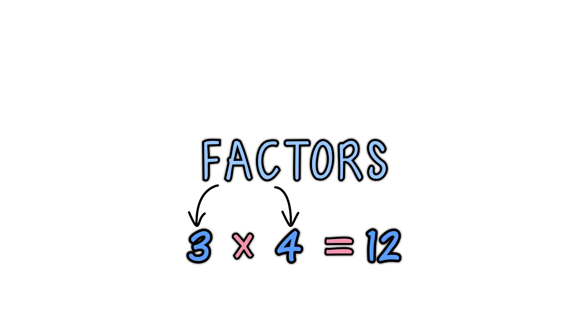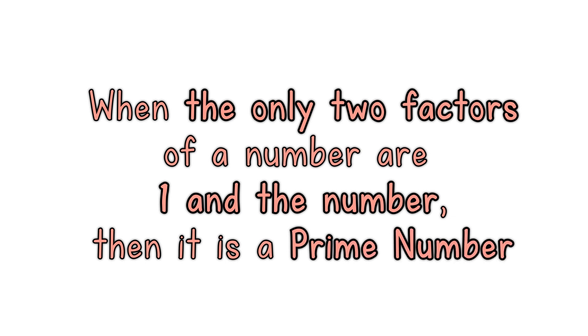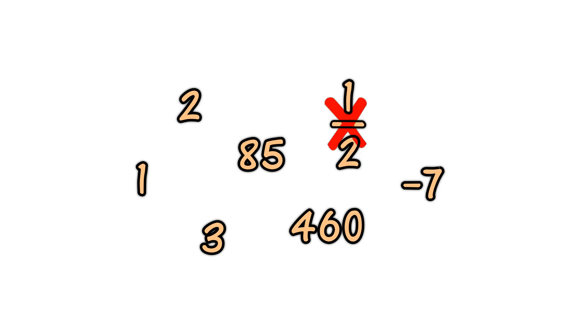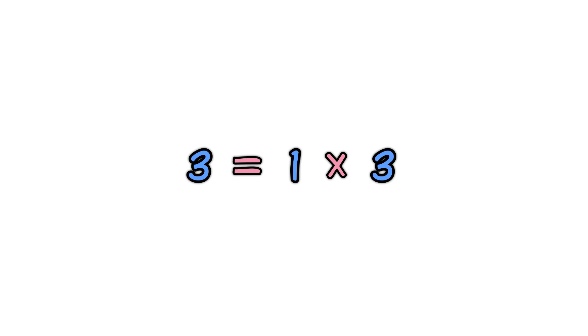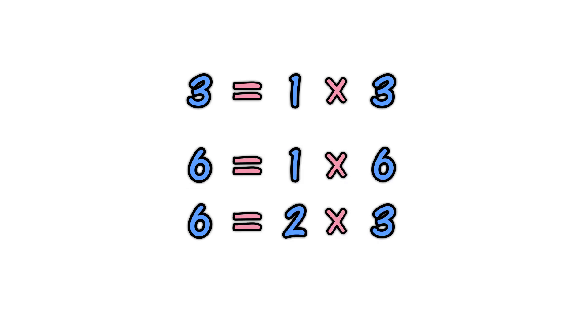Factors. We can also define a prime number using factors. Factors are numbers we multiply together to get another number. When the only two factors of a number are 1 and the number itself, then it is a prime number — it means the same as our previous definition, just stated using factors. And remember, this is only about whole numbers: 1, 2, 3, etc. Not fractions or negative numbers. So don't say I could multiply half times 6 to get 3. For example, 3 equals 1 times 3 — the only factors are 1 and 3, so it is prime. 6 equals 1 times 6 or 2 times 3 — the factors are 1, 2, 3, and 6. So when there are more factors other than 1 or the number itself, the number is composite.